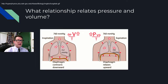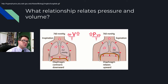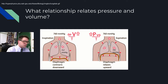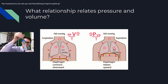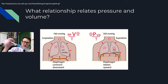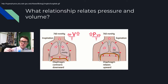In order to get air into your lungs, we use a mechanism you learned about in chemistry called Boyle's Law. Boyle's Law states that in a fixed space, if you change the volume, you change the pressure inside it. As I increase the volume, the pressure inside decreases. If I decrease the volume, the pressure inside increases.